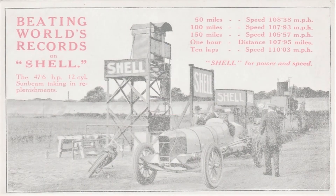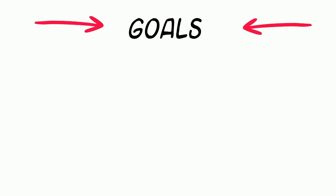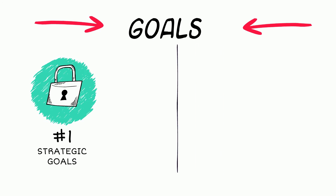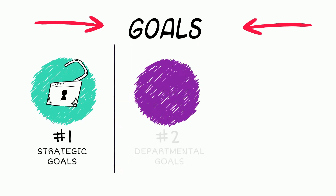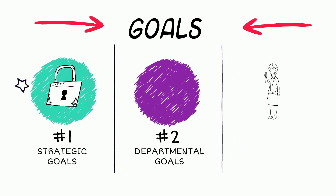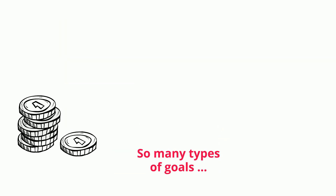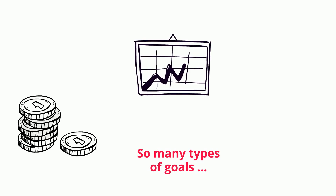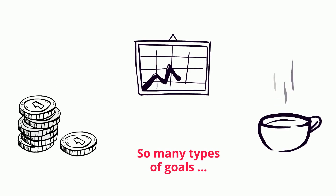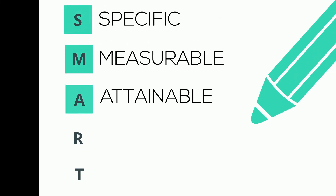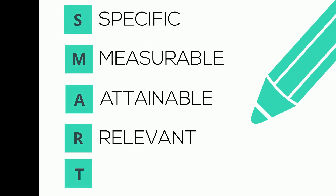Strategic goals are statements of specific outcomes that are to be achieved. All aspects of the organization should have goals — from strategic goals set by the organization, to department goals set to meet those strategic goals, and individual goals to meet departmental goals. Goals can be expressed as financial terms, market outcomes, social norms or any other achievable goal. Goals should be SMART: specific, measurable, attainable, relevant and time bound.